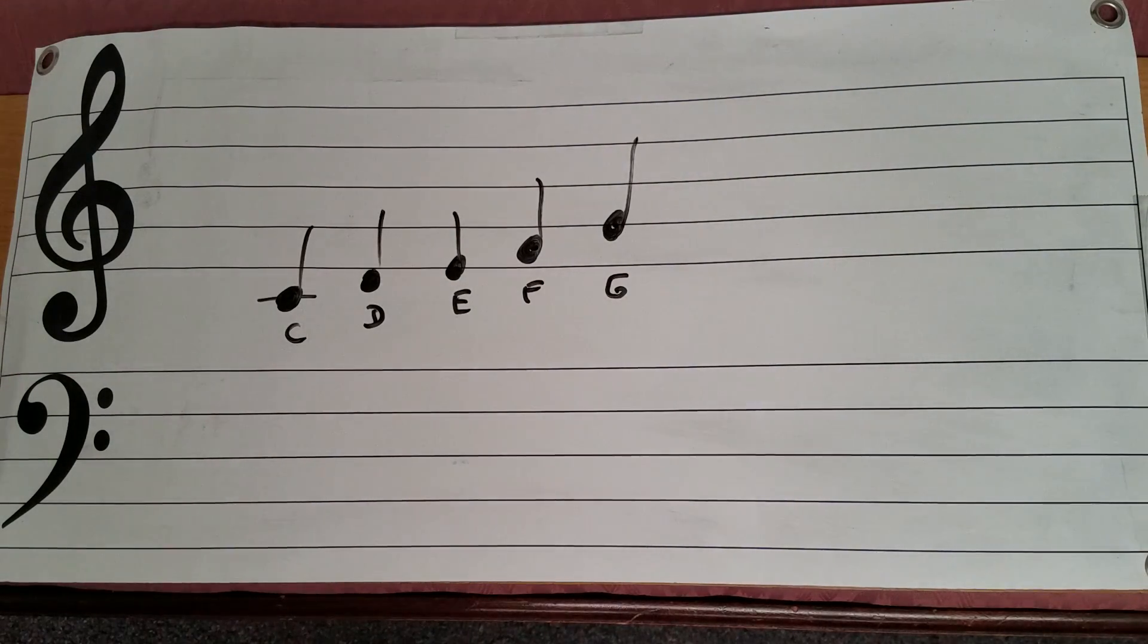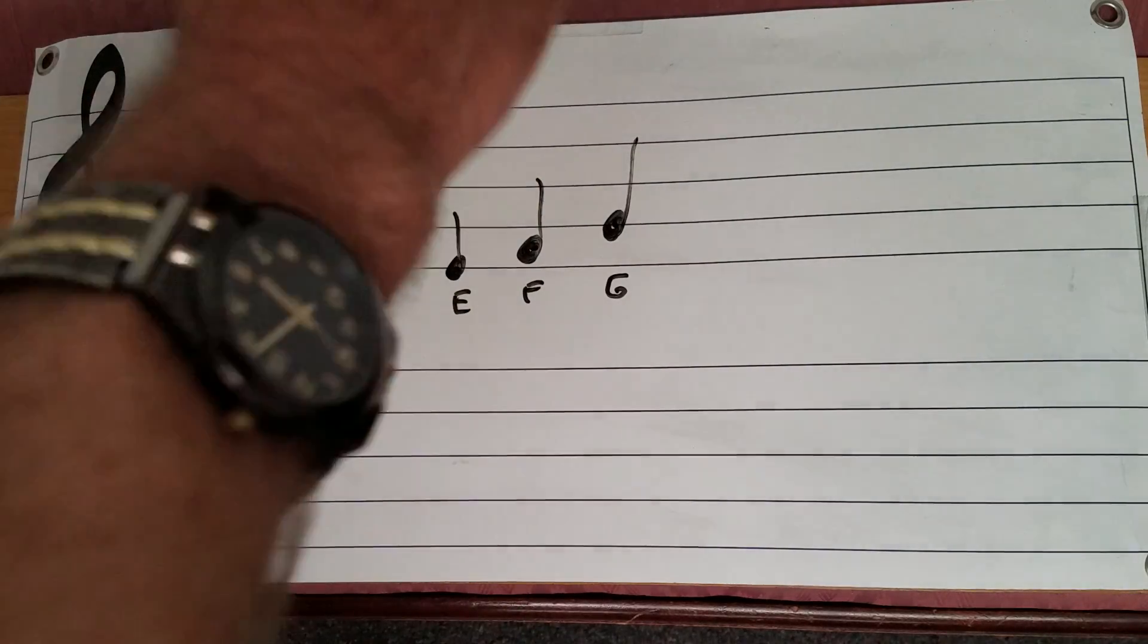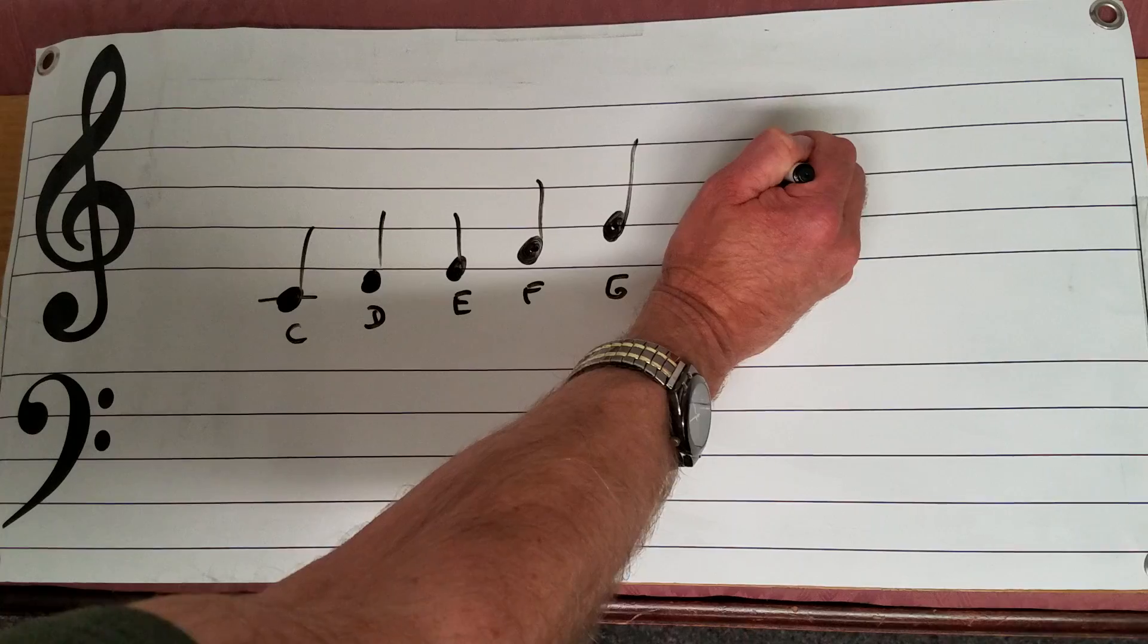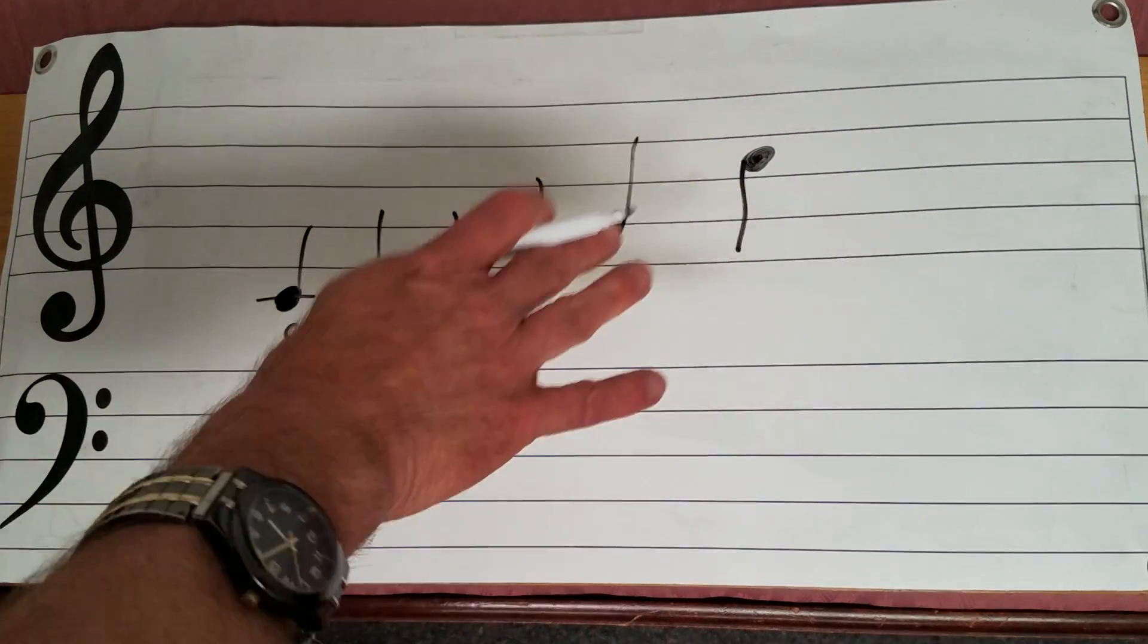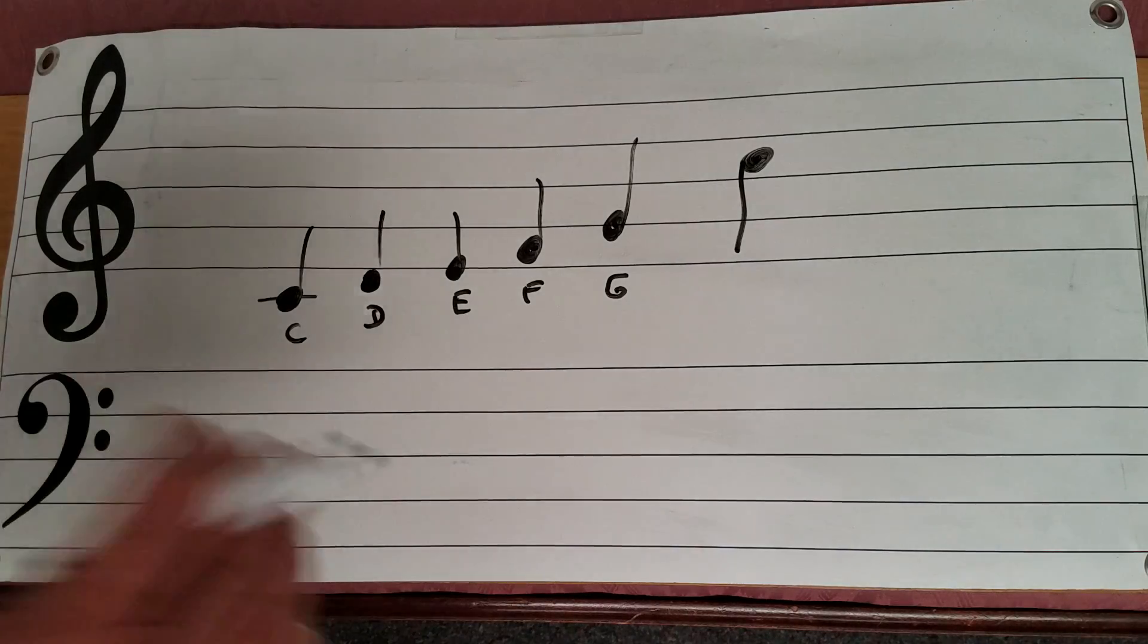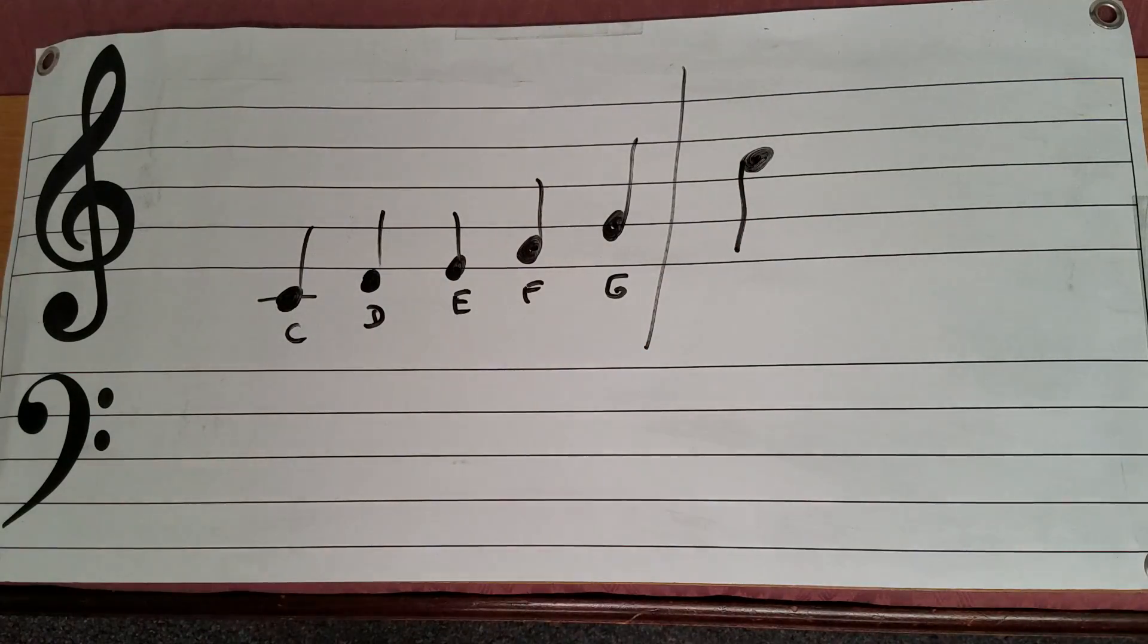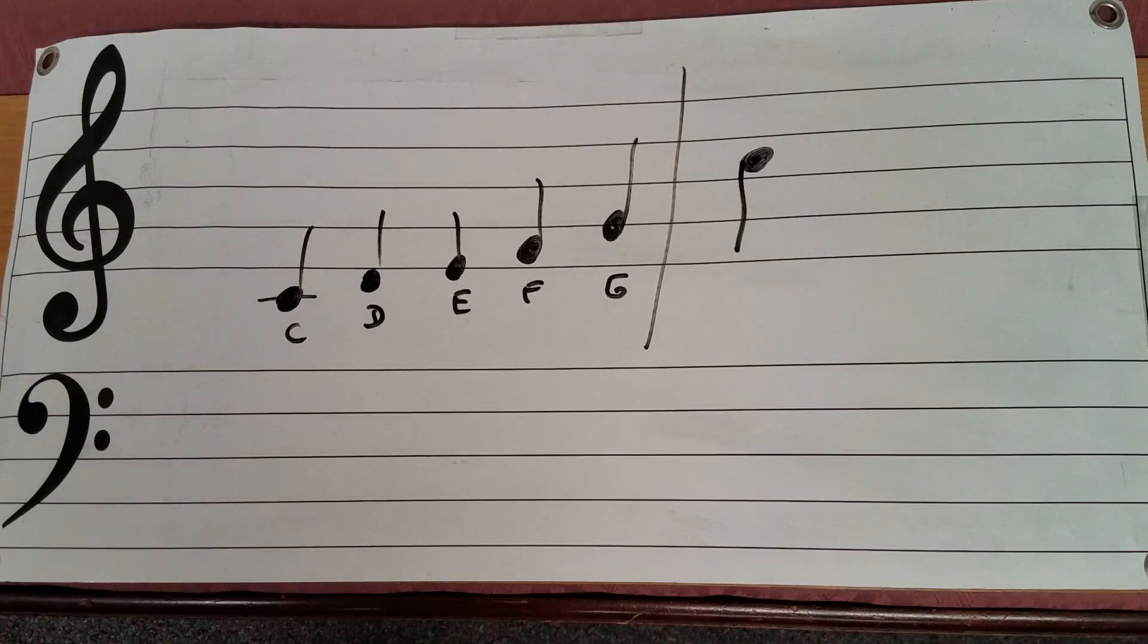Now in terms of the newest note I'd like to teach you, I am going to do one kind of outlying. It's kind of up here and I'm even going to put the stem down like this because as we get higher we tend to put the stems down so that it doesn't run off the page. But this is the newest note I want to teach you right here and this is what I tell students is the higher C.